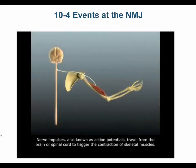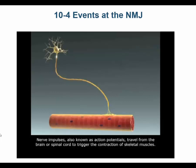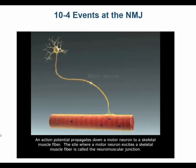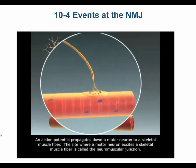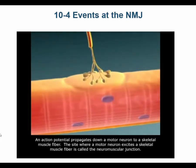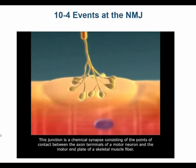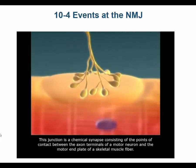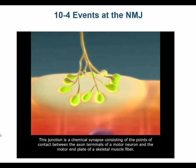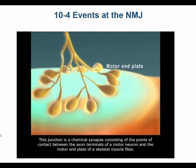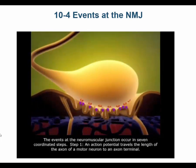Nerve impulses, also known as action potentials, travel from the brain or spinal cord to trigger the contraction of skeletal muscles. An action potential propagates down a motor neuron to a skeletal muscle fiber. The site where a motor neuron excites a skeletal muscle fiber is called the neuromuscular junction — a chemical synapse consisting of the points of contact between the axon terminals of a motor neuron and the motor end plate of a skeletal muscle fiber. The events at the neuromuscular junction occur in seven coordinated steps.